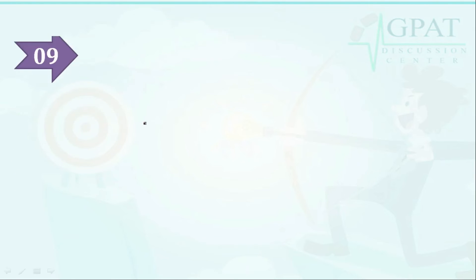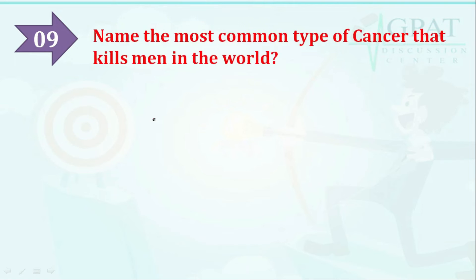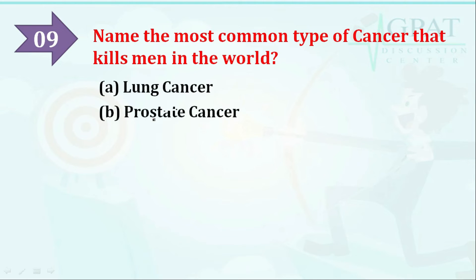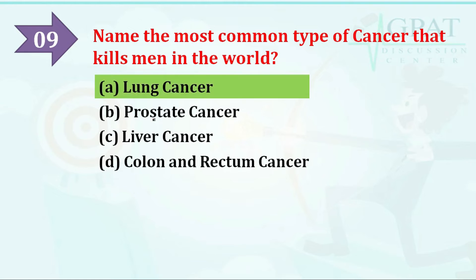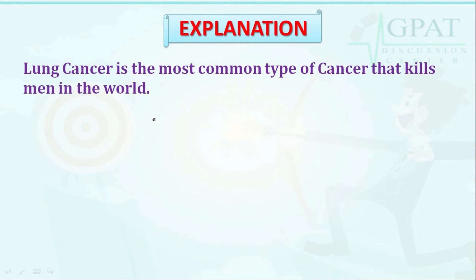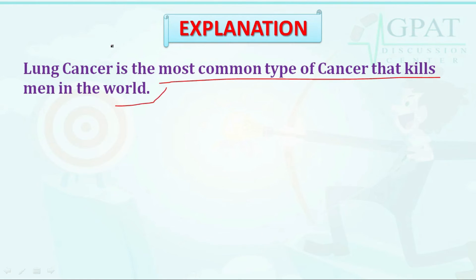The next question: name the most common type of cancer that kills men in the world. Options are: option A: lung cancer, option B: prostate cancer, option C: liver cancer, option D: colon and rectum cancer. The correct answer is lung cancer, which is the most common type of cancer that kills men in the world.